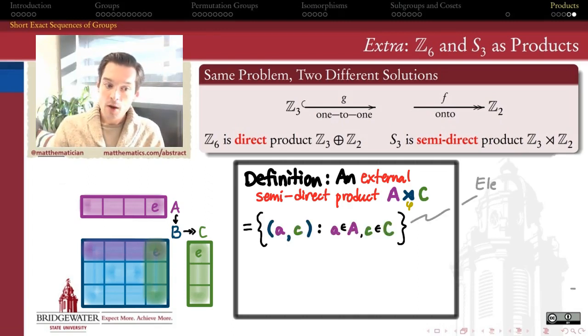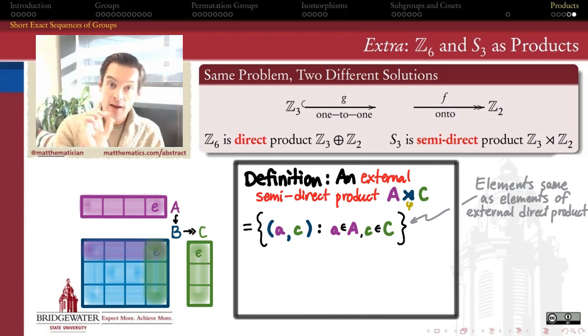The external semi-direct product of A with C is going to have as its elements ordered pairs where the first entry comes from A and the second entry comes from C. In other words, the elements of an external semi-direct product are ordered pairs in exactly the same way as elements of an external direct product. Nothing is different at the level of elements between a direct product and a semi-direct product.